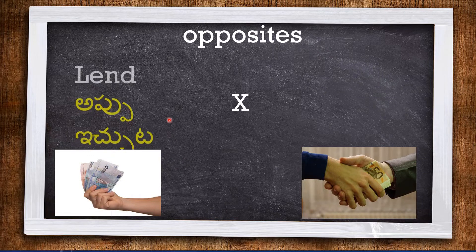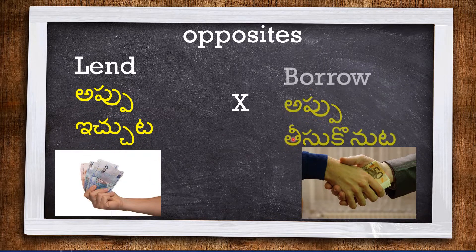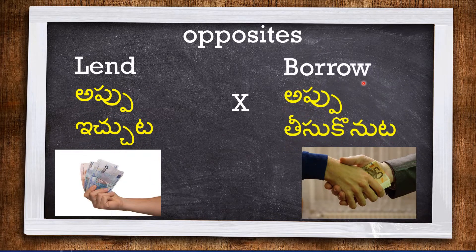The next one is LEND, meaning giving money to people. And the opposite is BORROW — taking money from some other person is called borrowing.